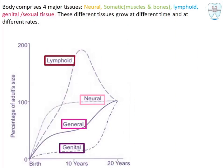Now for Scammon's curve: the body comprises four major tissues — neural, somatic (which includes both muscles and bones), lymphoid, and genital or sexual tissues. These tissues grow at different times and at different rates. Scammon's curve plots age on one axis and the size of the particular tissue on the other.